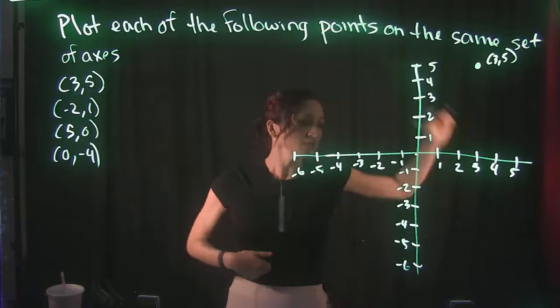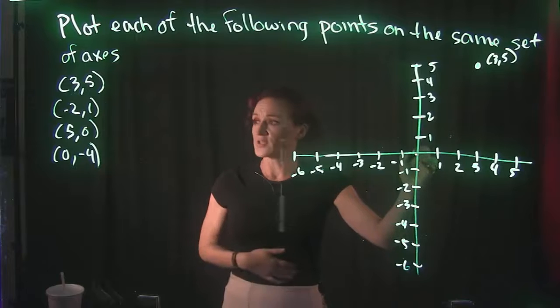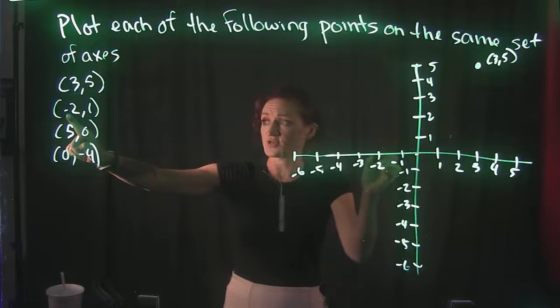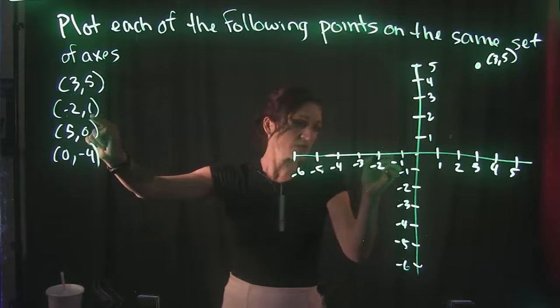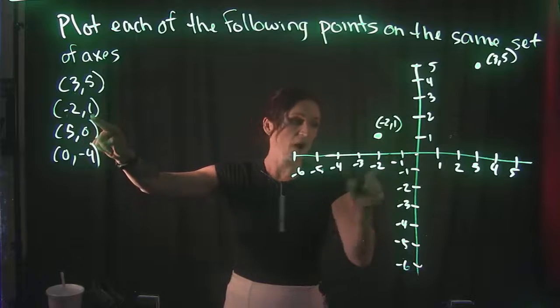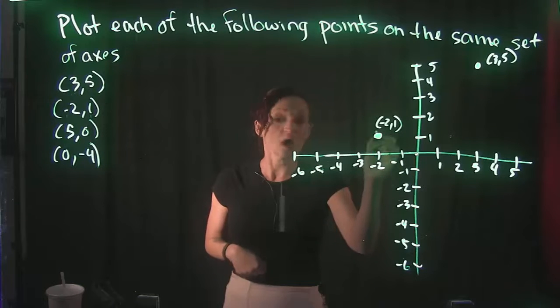Our second point: negative 2, 1. So new point, so we're starting back at the origin. And that's a negative 2 in the x direction, so that's left 2, and then a positive 1 in the y, so that's up 1. So that's negative 2, positive 1. Left 2, up 1.